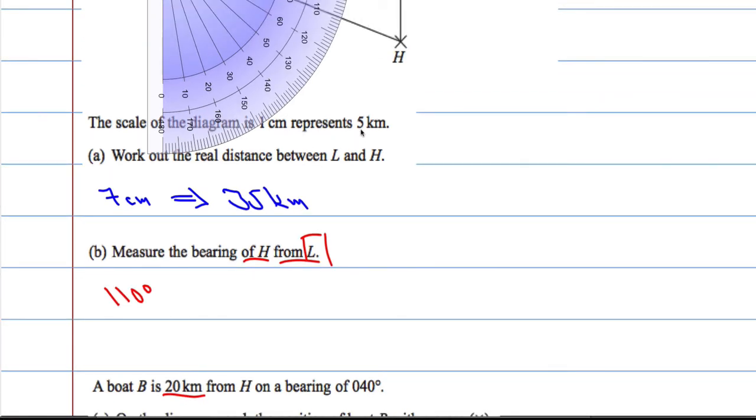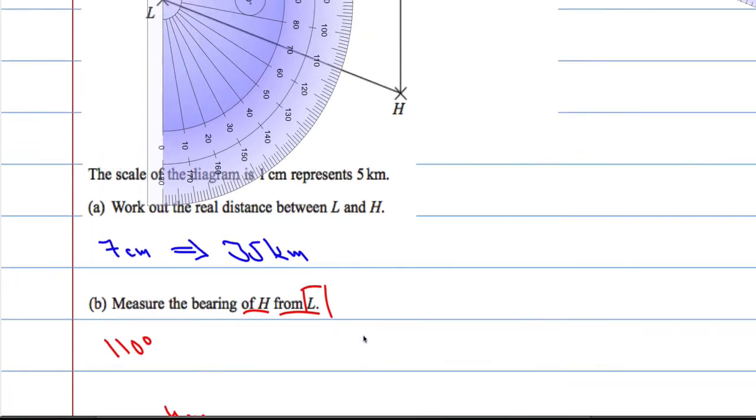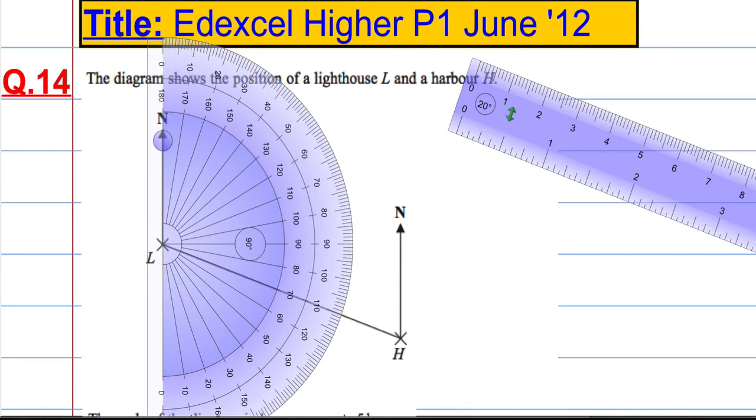And if 1cm is 5km, 5 times 4 is 20. So it's going to be 4cm from H on a bearing of 040. So it's from H. From H on a bearing of 040. So it's about 40 degrees. Something like that.